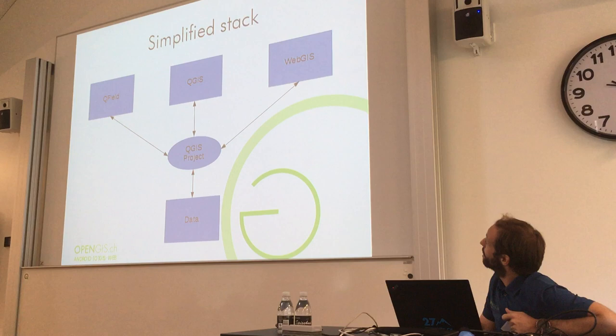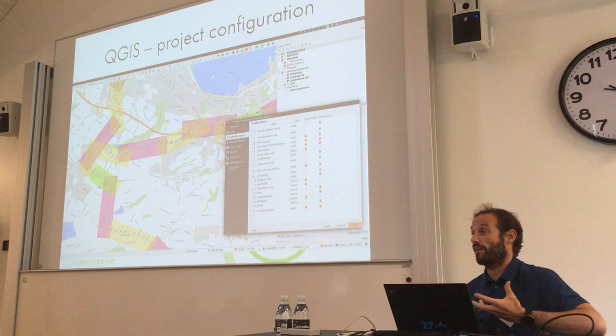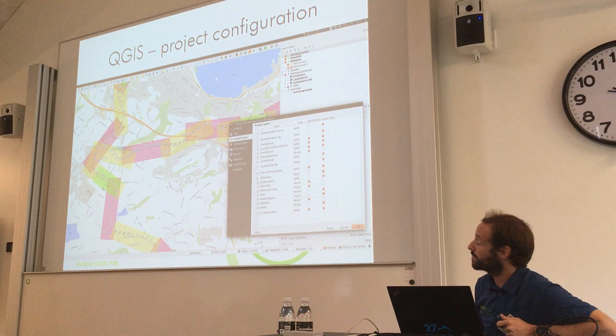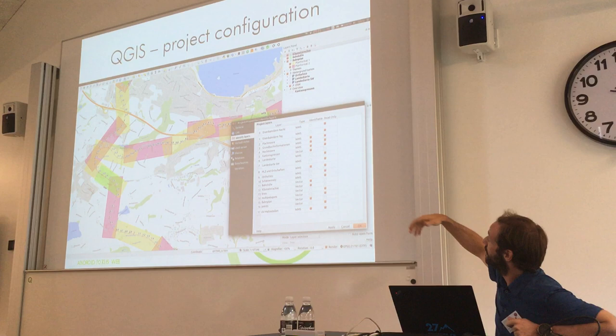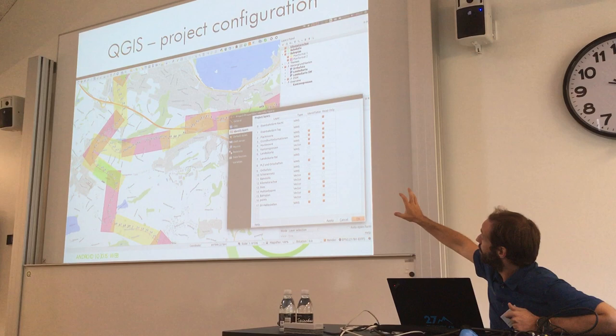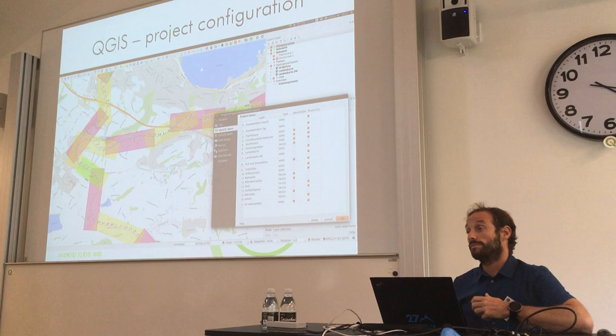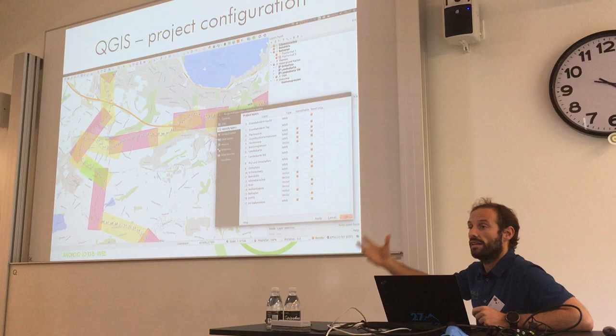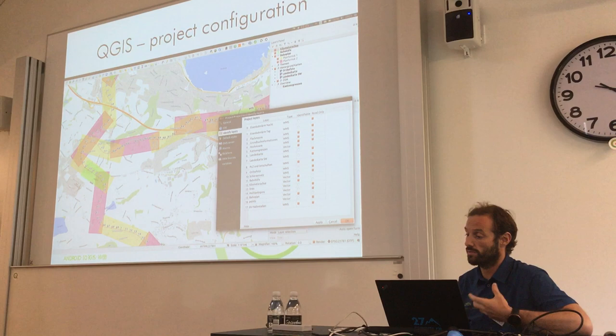So what do we do first? We start to prepare our QGIS project. Usually we do that on the QGIS desktop. We set up all the layers the way we want them, we style them, we decide if they are to be visible via WMS or via WFS, whether they are going to be identifiable, whether they are going to be read-only layers. Everything that we want the project to be is the first thing we do. We build up our project — we want a solid project to start off with.